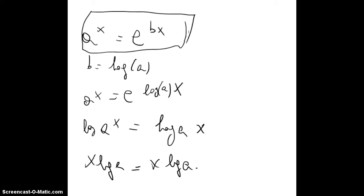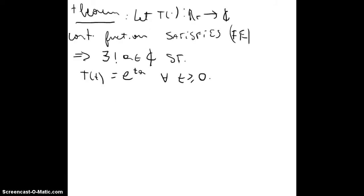Just to clarify, we finished the last video saying that if we have a function T going from R+ to complex numbers, it's a continuous function that satisfies a functional equation, then there is a unique a such that T(t) is equal to e^(ta) for all t greater than or equal to 0.